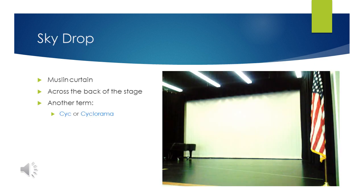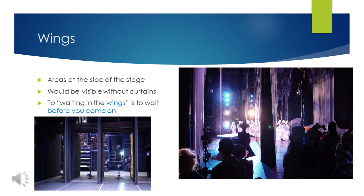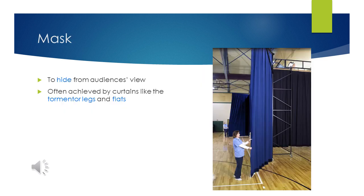The sky drop is a muslin curtain. Muslin is a type of fabric theaters use a lot of, usually in their flats. This curtain goes across the back of the stage. Another term for it is psych or cyclorama. Wings are the areas at the side of the stage — they would be visible from the audience without the curtains. The phrase 'waiting in the wings' means to wait before coming on stage. To mask is to hide from the audience's view, and this is often achieved with tormentor legs and flats.